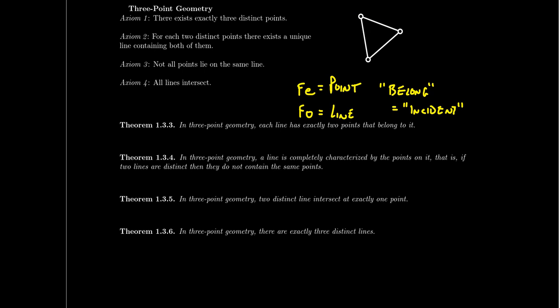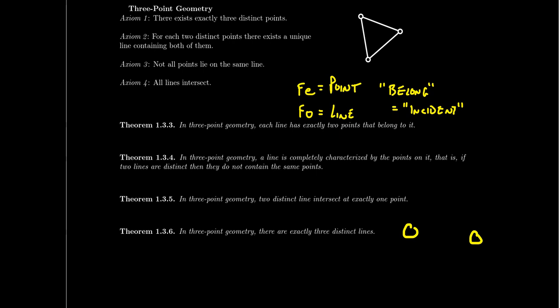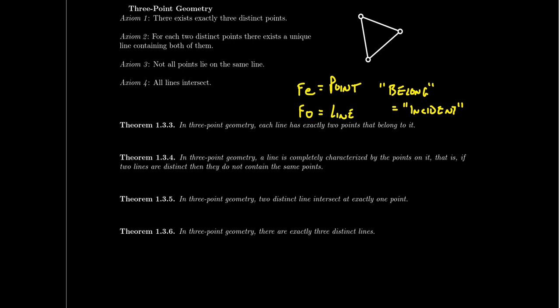So a line is actually determined and characterized by the points it's incident to — we could have defined lines to be sets of points with no difference in the theory. Theorem three in three-point geometry: two distinct lines intersect at exactly one point. Axiom four told us all lines intersect, and furthermore the intersection is unique — we don't get two lines intersecting at two different points. And the last theorem: in three-point geometry, there are exactly three distinct lines. With the right perspective, many axiomatic theorems can be thought of as geometries. As long as we have a notion of line and point, we have a geometry, so Fee-Foe theory is also a geometric theory, and going forward we'll just talk about three-point geometry.